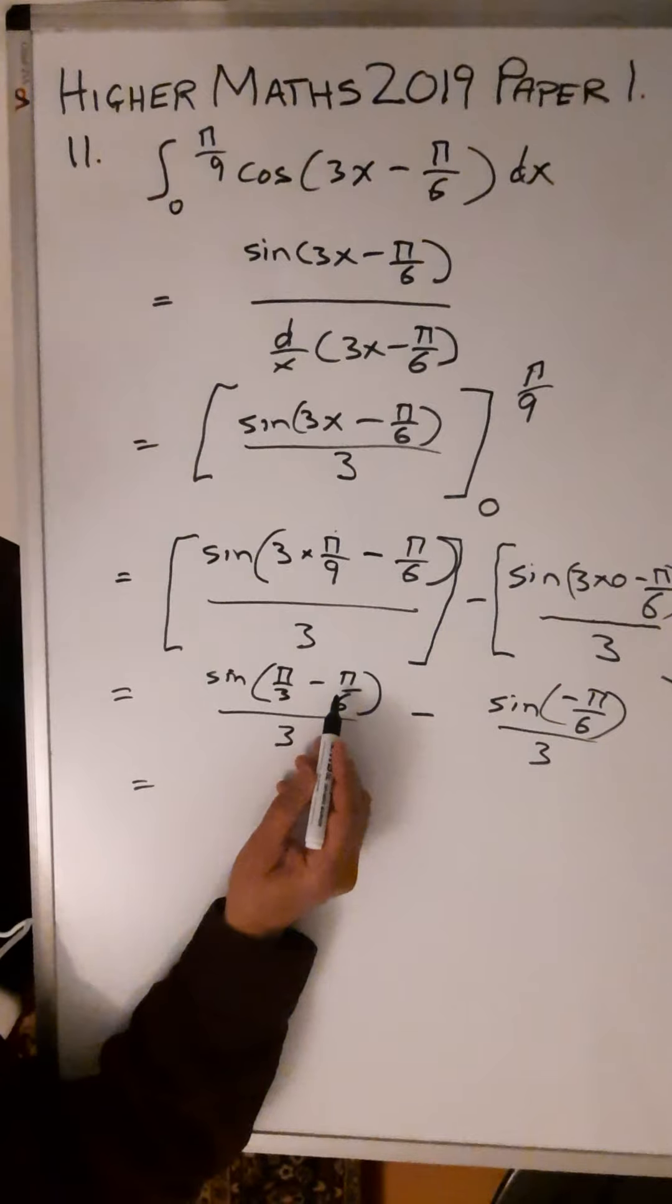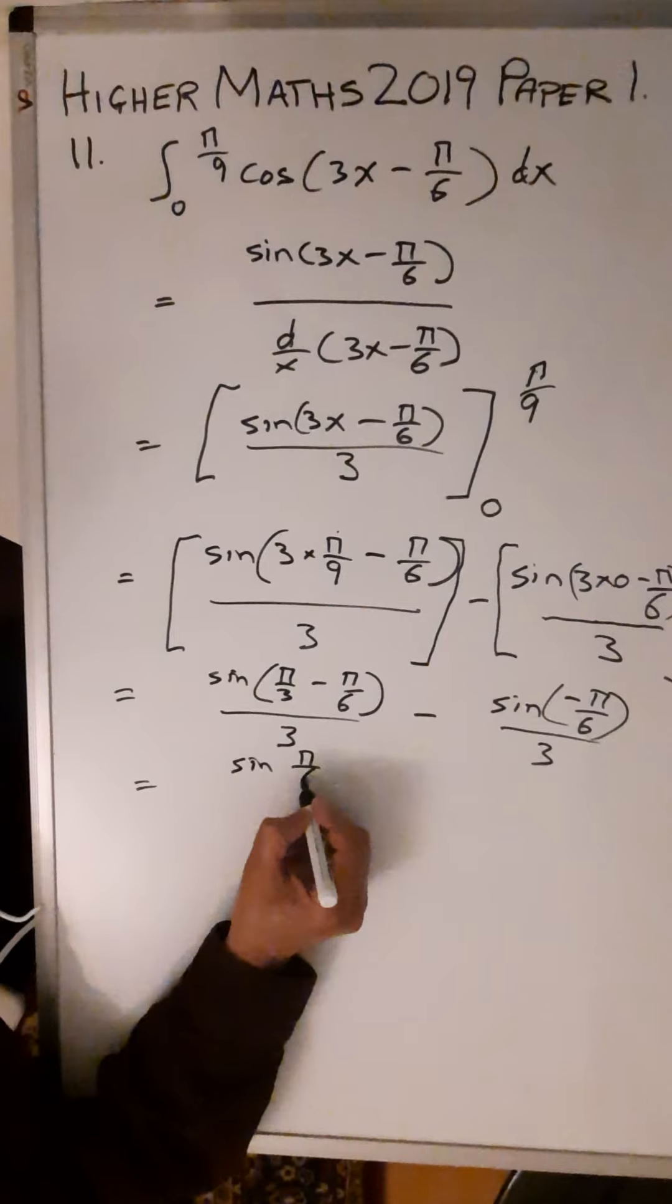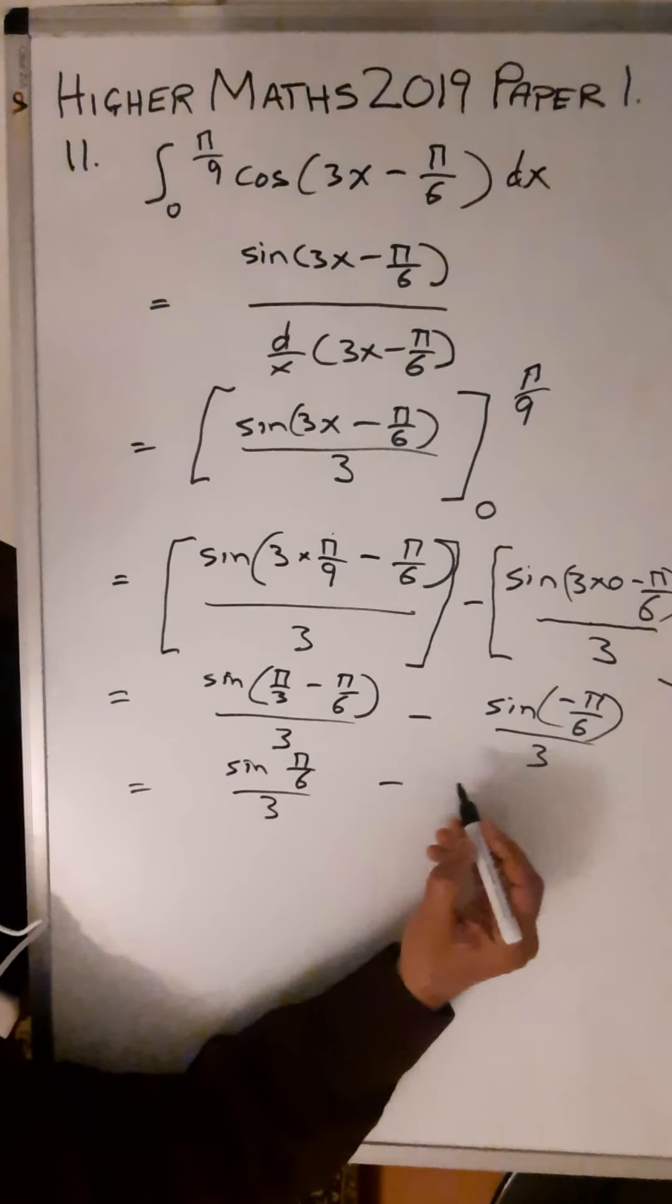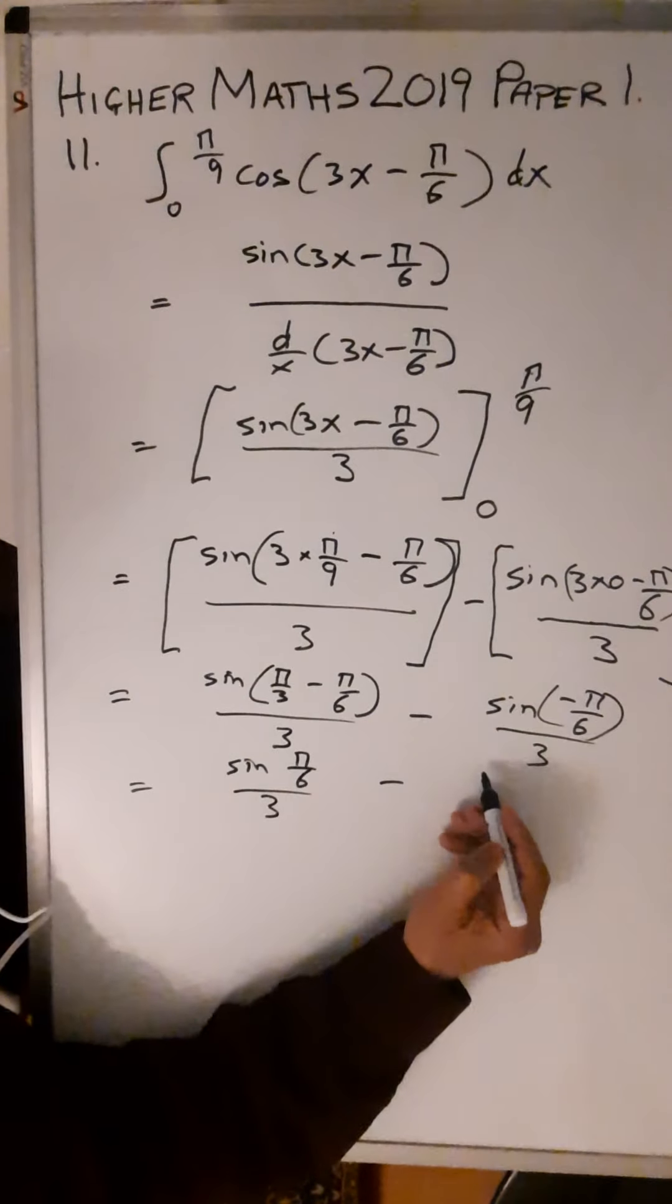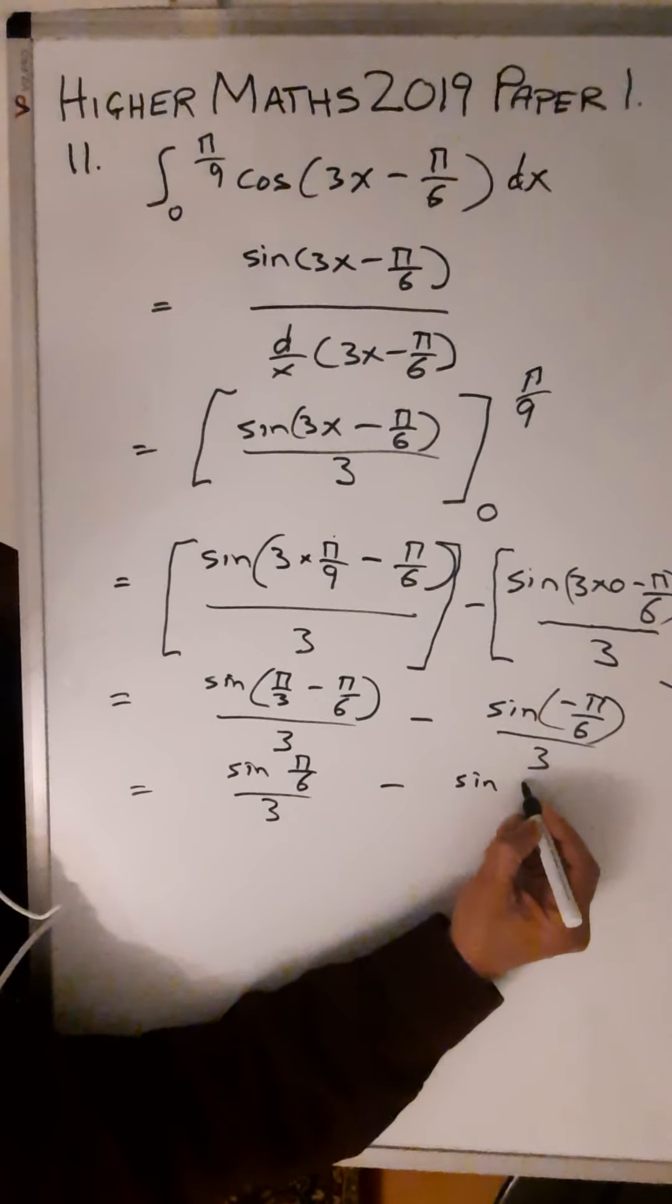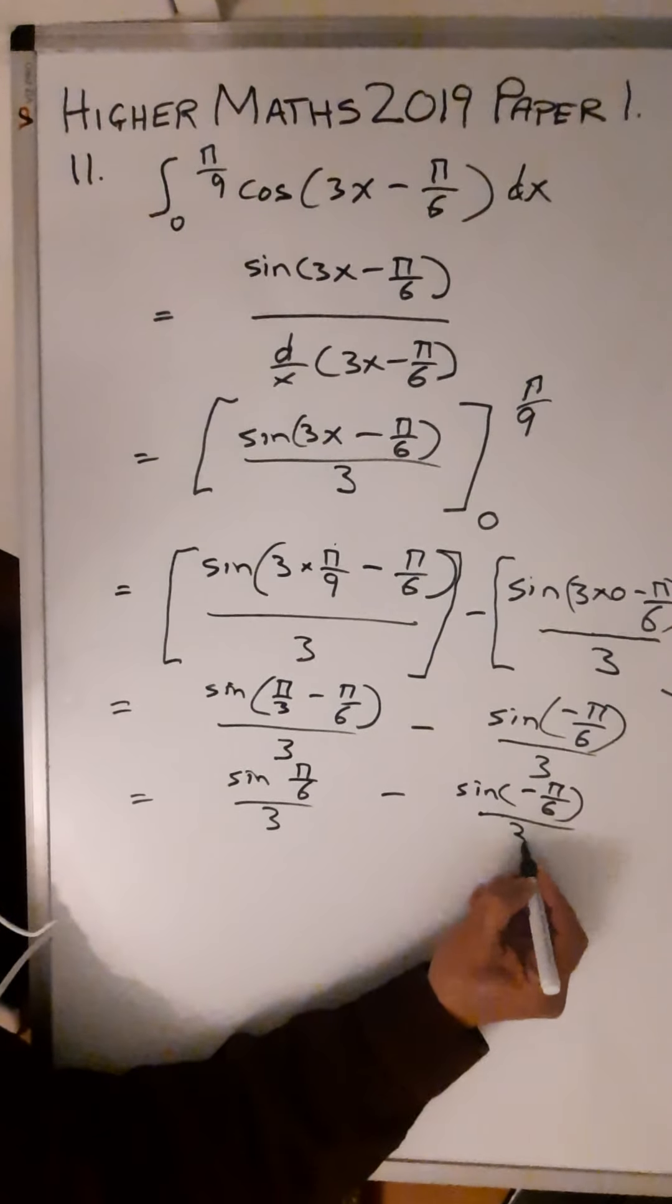sin(π/3 - π/6) just gives you sin(π/6) in the numerator with the 3 down here, minus sin(-π/6) all over 3.